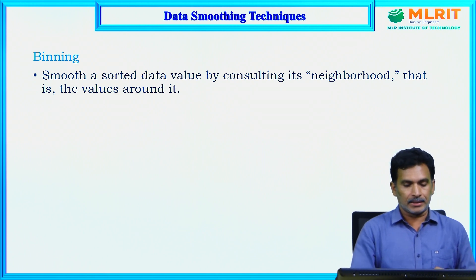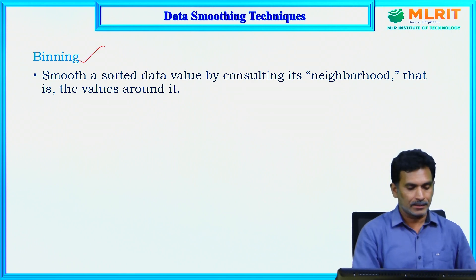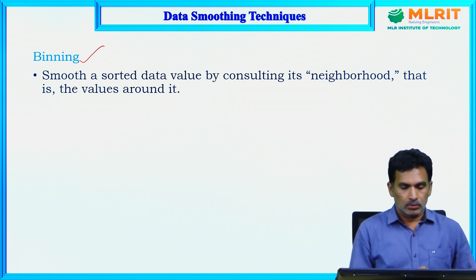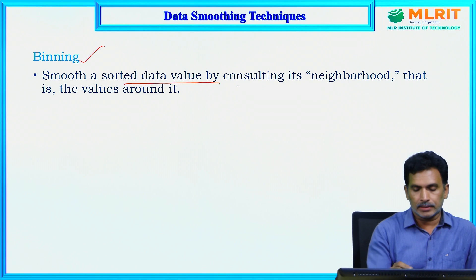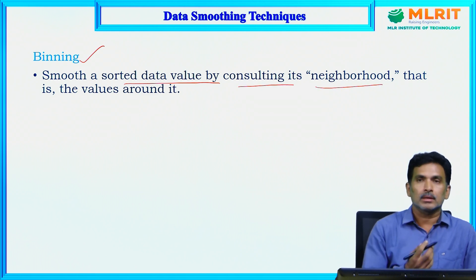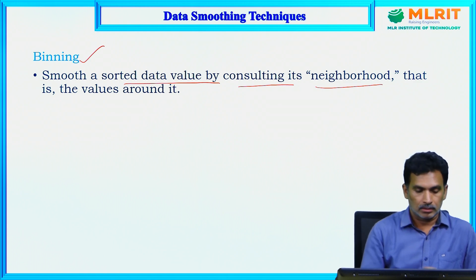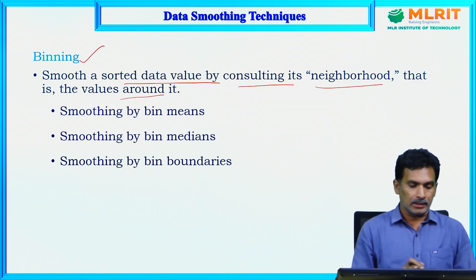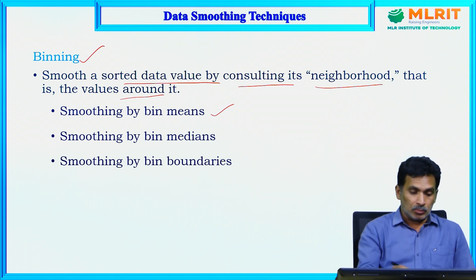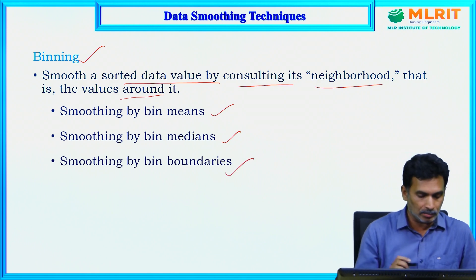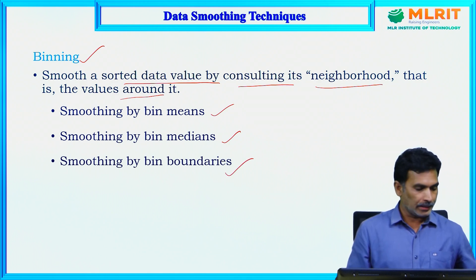There are different techniques to handle noisy data, and binning is one such technique. By using binning, we smooth data so that noise can be reduced. In the binning method, we smooth sorted data values by consulting their neighboring values. There are mainly three categories of binning methods: smoothing by bin means, smoothing by bin medians, and smoothing by bin boundaries.